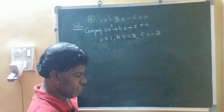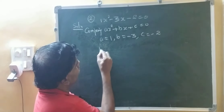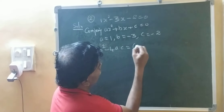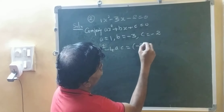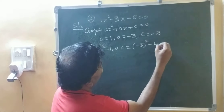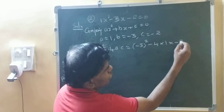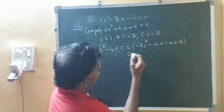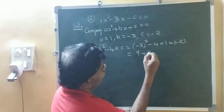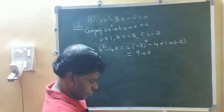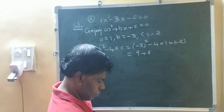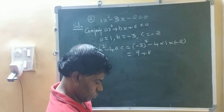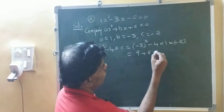Now, if you want, you can separately find out b squared minus 4ac — that will be easy for you. So b squared: minus 3 squared minus 4 into 1 into minus 2 gives us 9 plus 8, which is 17.